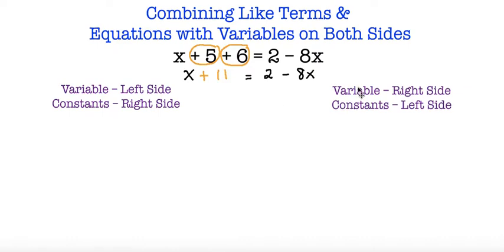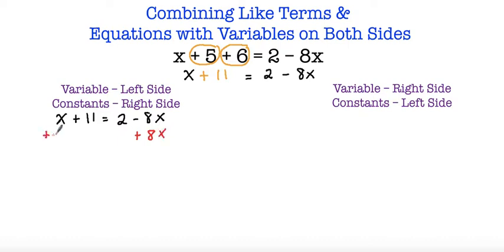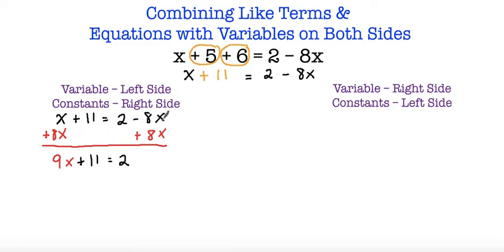Again we're going to solve using two different methods. The first one is where we move our variables to the left and constants to the right. So here we have our equation and if I want to get my variables to the left side I'm going to use inverse operations. I have minus 8x so I'm going to add 8x to both sides. x is the same thing as 1x, so 1x plus 8x is 9x. So I have 9x plus 11 is equal to 2, because these cancel out since they're opposites.